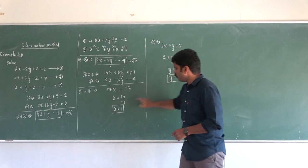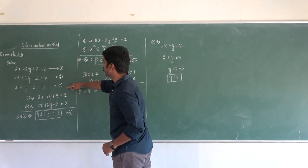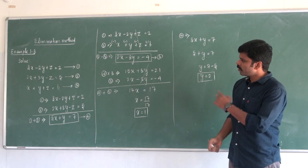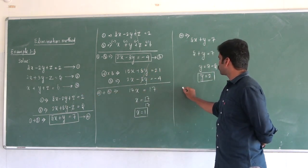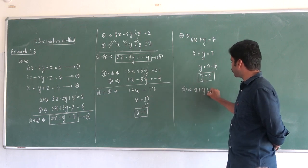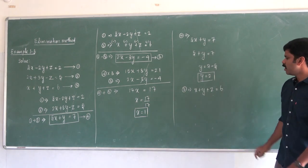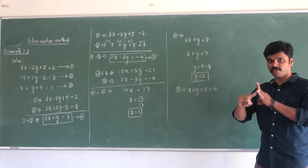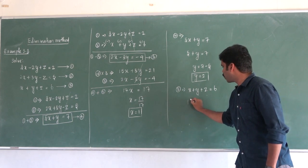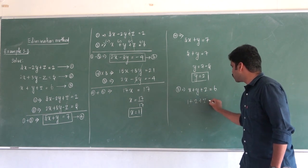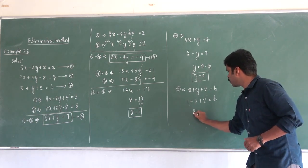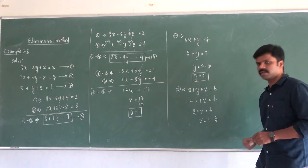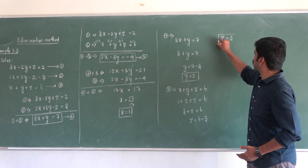After finding the values of y and x, we can use both values in any of the original equations to find z. I will use the third equation: x plus y plus z equal to 6. Substituting: 1 plus 2 plus z equal to 6, so 3 plus z equal to 6, then z equal to 6 minus 3, so z is equal to 3.